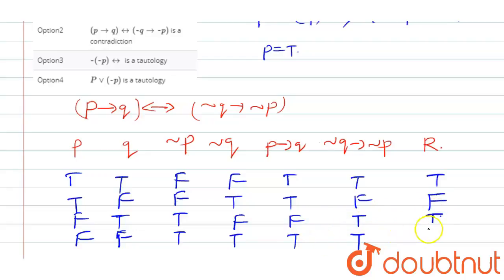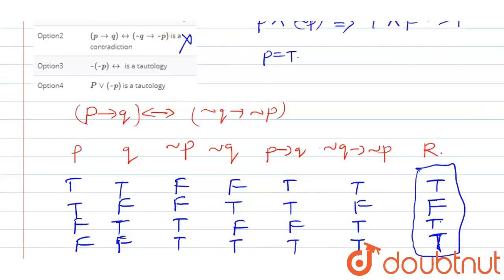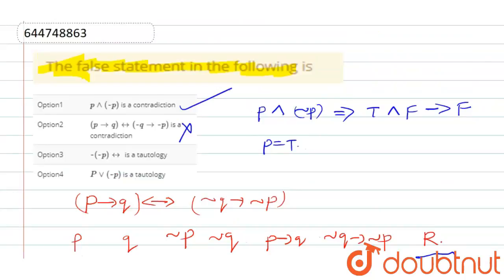The statement claims this is a contradiction, but we can see it is not a contradiction — the final results are not all false. Therefore option 2 is the wrong option, meaning it is the false statement.